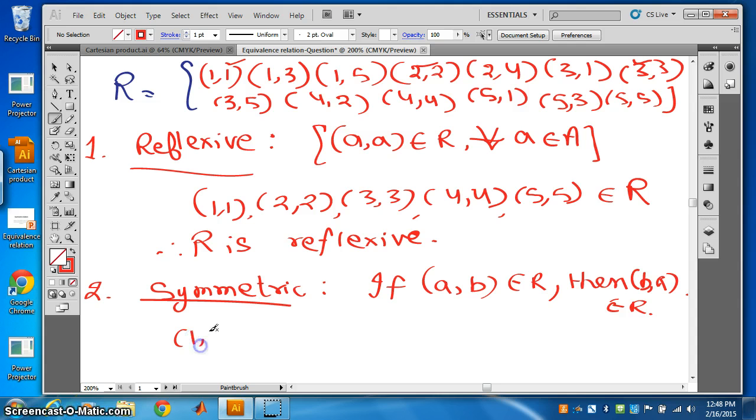So which are the ordered pairs? First we will see here in R. (1,3) belongs to R. Then look for (3,1). Do we have (3,1)? Yes, we can see (3,1) is also there. So we say (3,1) also belongs to R.